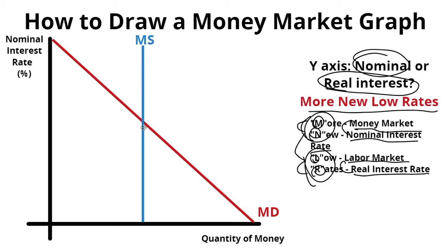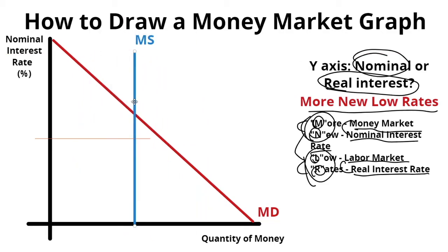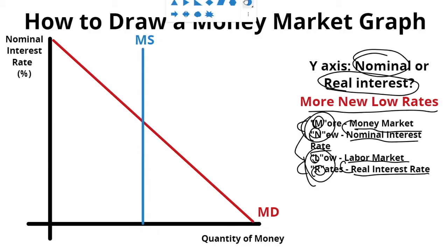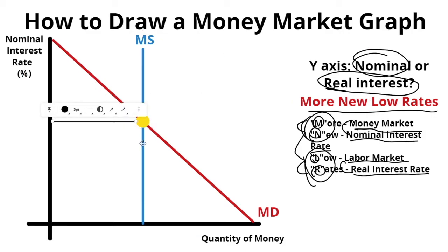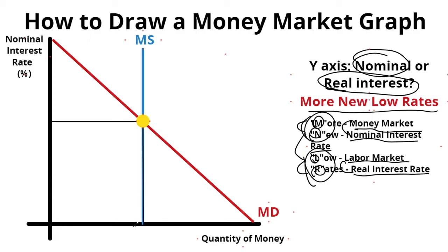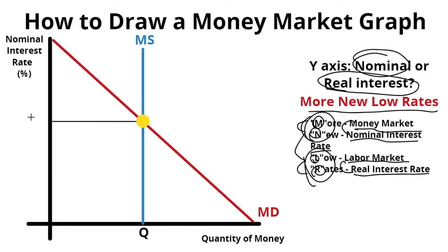It's better to put money supply toward the middle of the graph so that if you have to shift it, you won't run out of space. Where MD and MS intersect — I'll mark it with a big yellow circle — you can find your nominal interest rate and your quantity of money. Label the quantity as Q, and for nominal interest rates you can write I or IR.